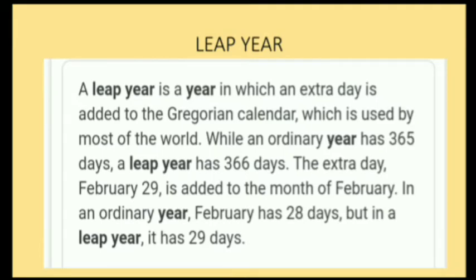A leap year is a year in which an extra day is added. The period for one revolution is about 365 and one-fourth days. A normal year has 365 days, so the remaining fraction of one-fourth day is added once in four years to make a leap year of 366 days. The month of February has 29 days instead of the normal 28 days. This happens every four years — for example, 2000 was a leap year, then 2004, 2008, and so on.